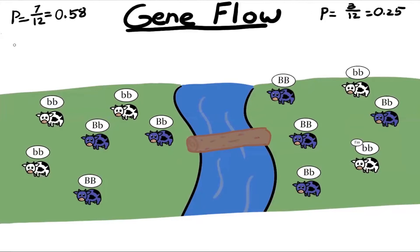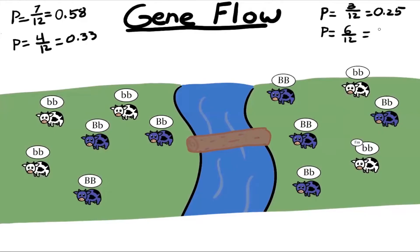After that migration event, let's take a look at the new allele frequencies. After the first migration, we have a dominant allele frequency of 4 over 12, or 0.33, in the first population. On the second population, we have six dominant alleles out of 12, making the allelic frequency 0.5.